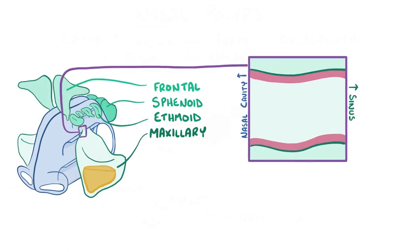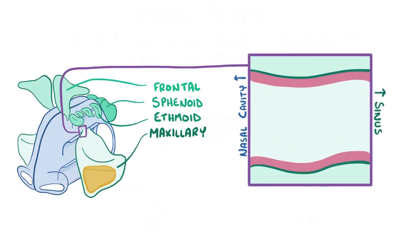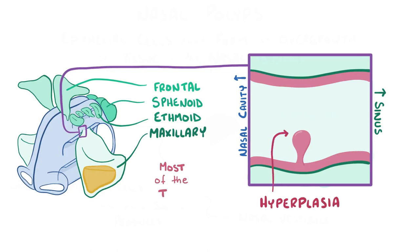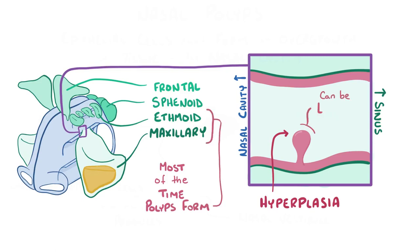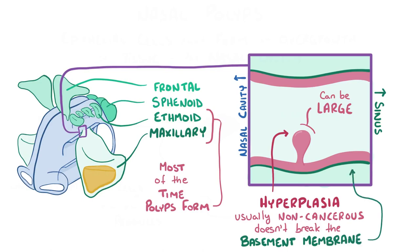Nasal polyps develop when epithelial cells that line the respiratory region simply overgrow, a process called hyperplasia. Most of the time, one or more nasal polyps forms in the maxillary or ethmoid sinus. Nasal polyps can get large — the size of a pea — but they're usually non-cancerous, meaning they don't break through the basement membrane of the epithelium.